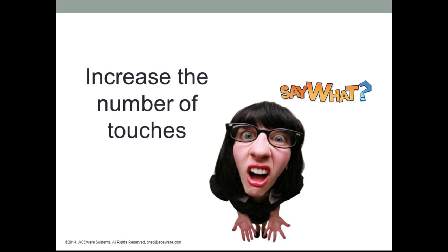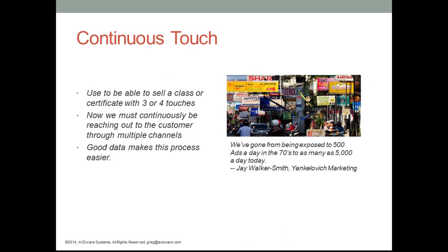One of the main goals of engagement marketing is to increase the number of touches on your program. This is the number of times someone hears about your program, products, or services. Let's talk about a concept called continuous touch. In the old days, we used to be able to sell a class or certificate with three or four touches. Now, we must continuously reach out and touch the customer through multiple channels. These channels could include paid ads in the paper, postcards, social media, Facebook, emails, and newsletters. We have to continuously reach out and engage with the customer.